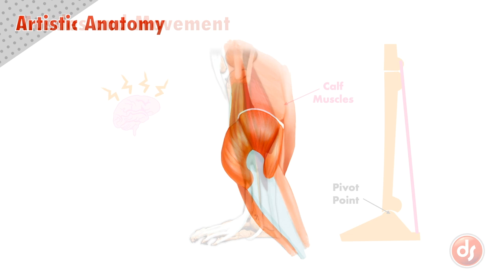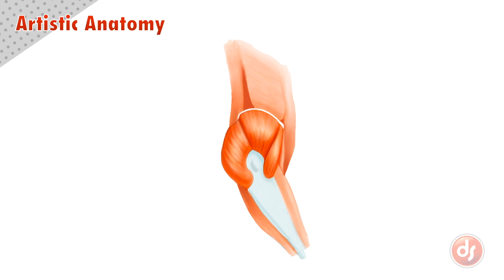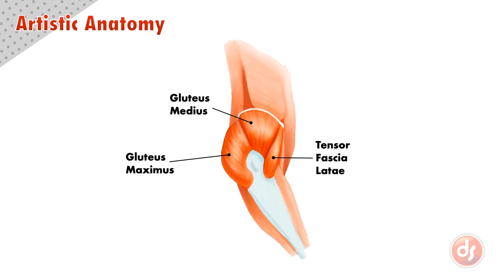What we learn for artistic anatomy is a very simplified version that focuses on the way muscles affect the surface. For example, in an artistic anatomy textbook, you will usually see the gluteus medius, gluteus maximus, tensor fasciae latae, and iliotibial band represented like this.